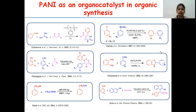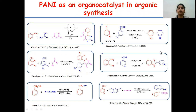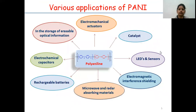This thereby provides a wide variety of catalytic applications. Because of its conducting nature, besides in organic synthesis, PANI also finds its application in many other fields, such as in the storage of erasable optical information, in electrochemical capacitors, rechargeable batteries, LEDs, sensors, and many more. These are the various literature reports in which polyaniline has been used as an efficient organocatalyst for various organic transformations.